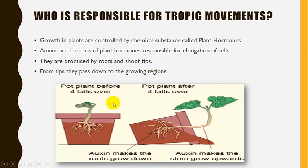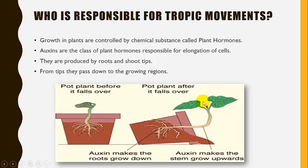Here you can see that a potted plant, before it falls over, looks straight. After it falls over, auxin makes the roots grow downward and also makes the stem grow upward. This is how auxin controls and is responsible for the elongation of cells.